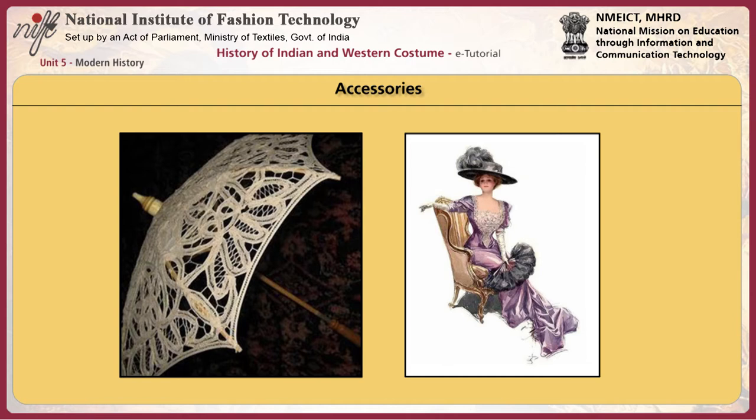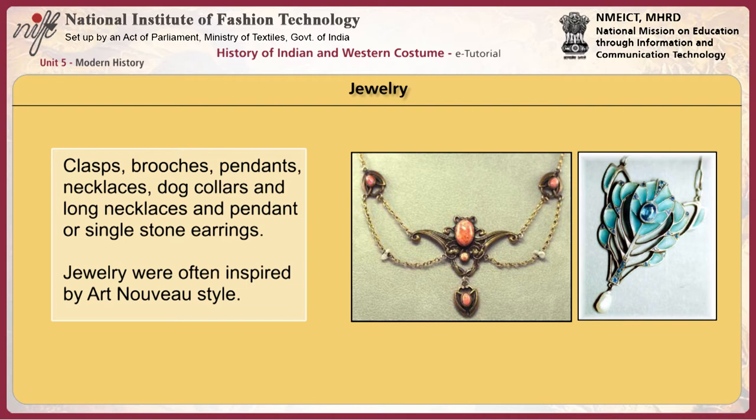Swiss belts were revived from the 1860s. Ruffles, boas, ribbons or cravats were worn around the neck. Jewellery was often inspired by the Art Nouveau style. Clasps, brooches, pendants, necklaces, dog collars, and long necklaces with pendants or single stone earrings were the main jewellery worn.